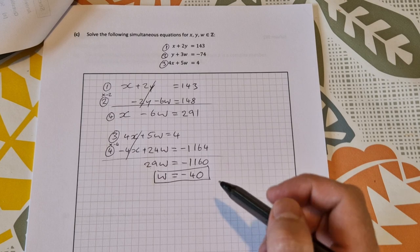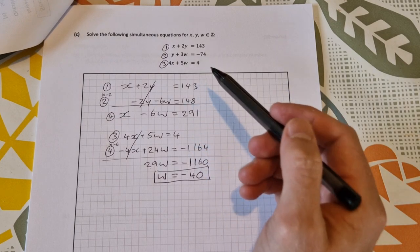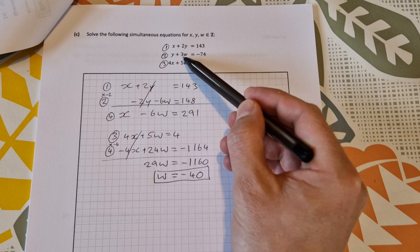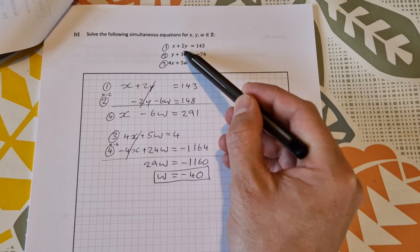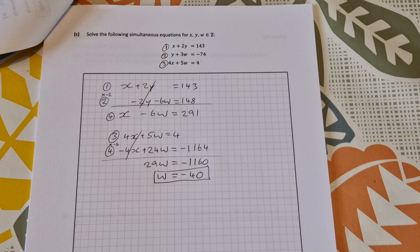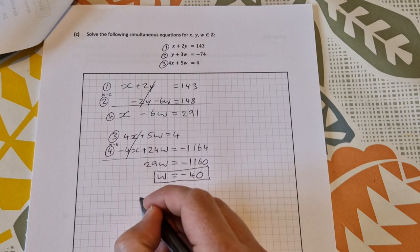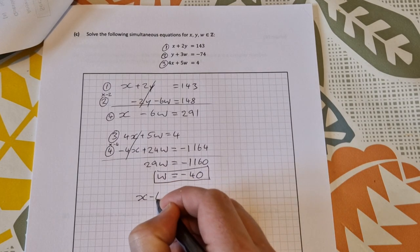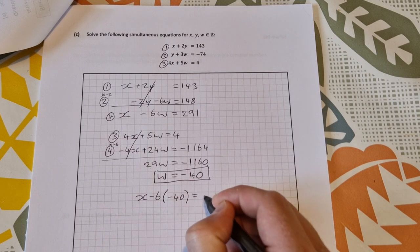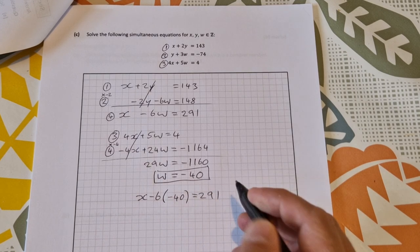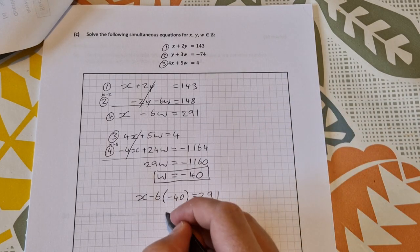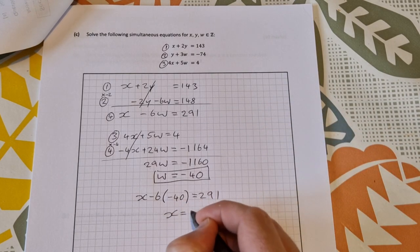I can then find y or x. Actually I could sub in w into this equation here or I could sub in w into this equation here to find x and y. So let's sub into x minus 6 times minus 40 is equal to 291. So I'm going to sub into this one here. You can sub into any of them and that works out to give you x is equal to 51.